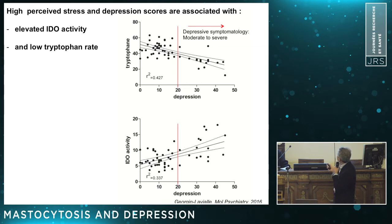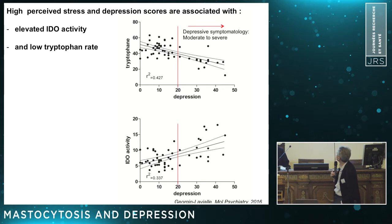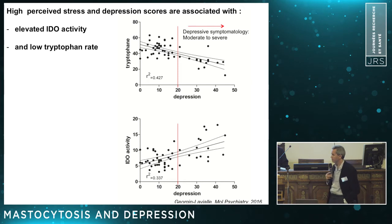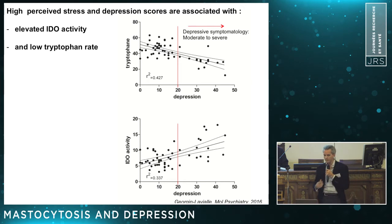Specifically, a negative correlation between tryptophan levels and scores of depression, and a positive correlation between IDO activity and depression level.